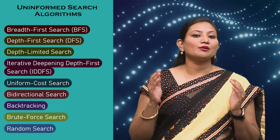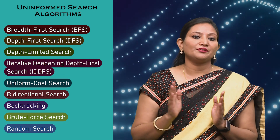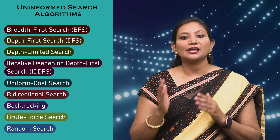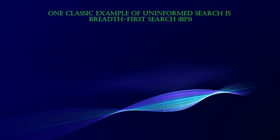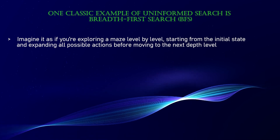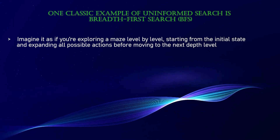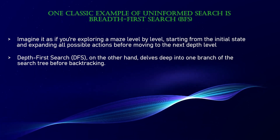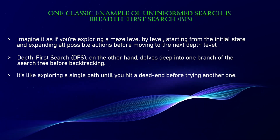It is important to note that uninformed search algorithms can be effective in specific contexts, but they may not always be the most efficient or optimal solution. The choice of algorithm depends on the problem's characteristics, constraints, and available resources. Using a diagram, one classic example is breadth-first search: imagine exploring a maze level by level, starting from the initial state and expanding all possible actions before moving to the next depth. DFS, on the other hand, dives deep into a branch of the search tree before backtracking — like exploring a single path until you hit a dead end before trying another.